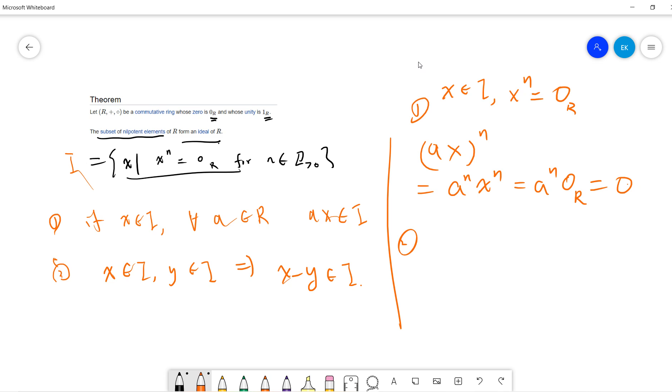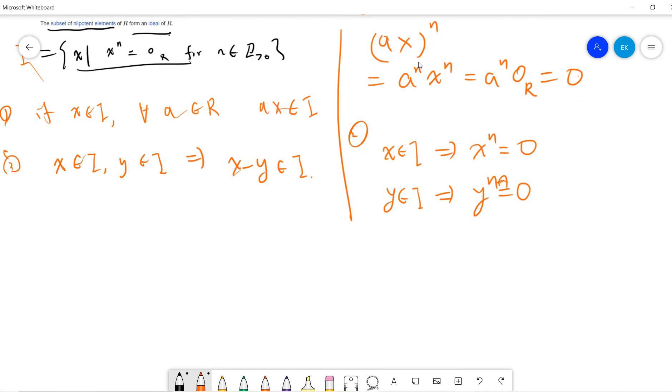For the second one, x belongs to I means x^n equals zero, and y belongs to I means y^n equals zero. For x minus y, I can take (x-y)^(n+n).